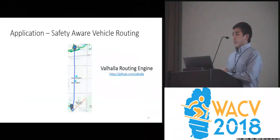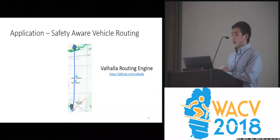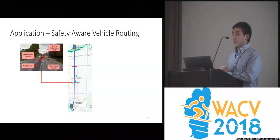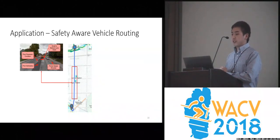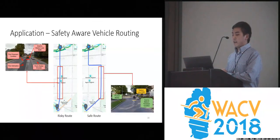An interesting application of our work is the concept of safety-aware vehicle routing. For example, given a route from point A to point B generated by the Valhalla routing engine that passes through a section deemed unsafe by our star rating network, the same engine, coupled with the star ratings produced by our network, can instead suggest less risky routes by avoiding the unsafe section in favor of a safer one.